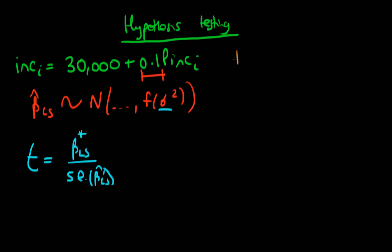The idea is that there is some null hypothesis, which states that the true population parameter is equal to some value. Normally we say the null hypothesis is that the true population parameter is equal to zero. But there are times when it isn't, and if our null hypothesis isn't that it's equal to zero, we need to amend our t-statistic by subtracting our null hypothesis beta from the least squares estimate. In most circumstances, and in most statistical programs, unless told otherwise, it will assume the null hypothesis is that beta equals zero.